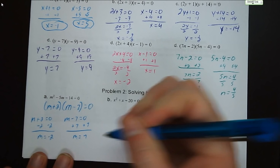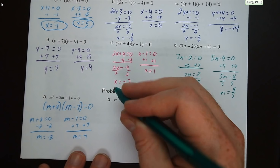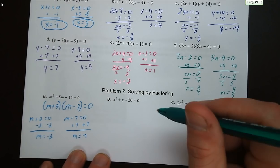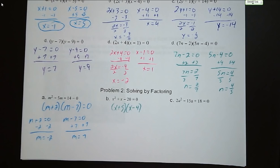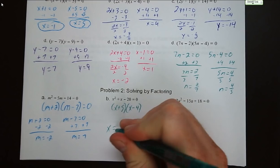Letter B: x squared plus x minus 20. Factors of negative 20 that add up to positive 1 — that's 5 and negative 4. So we factor as x plus 5 times x minus 4. Our two solutions are x equals negative 5 and x equals 4.